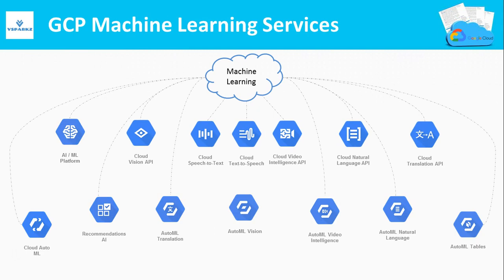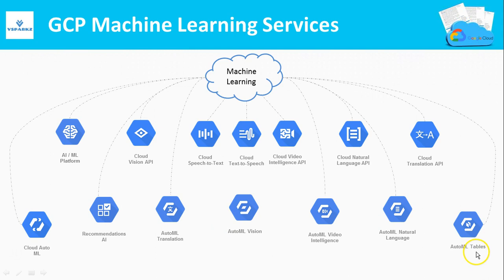GCP offers artificial intelligence and machine learning products as well, with greater flexibility. If you want to build your own model, you can go for the AI Platform. Otherwise, you can choose from pre-built models like Vision API, Speech API, Natural Language API, Translation API, etc. At the bottom of the slide, everything annotated with 'Auto' refers to AutoML products, using which you can train high-quality custom machine learning models with minimal effort and machine learning expertise.